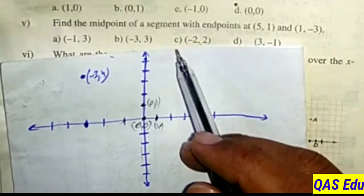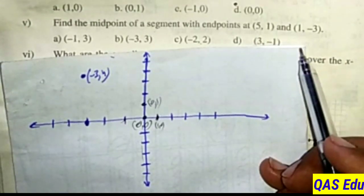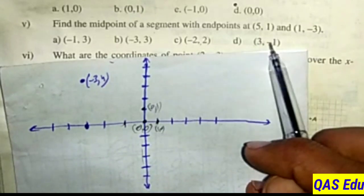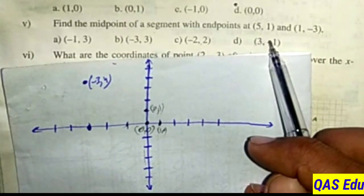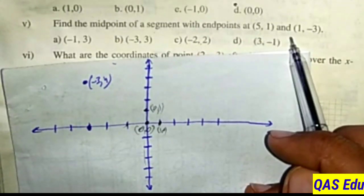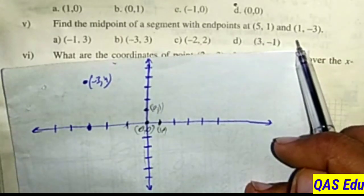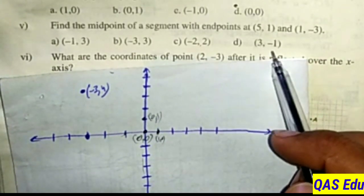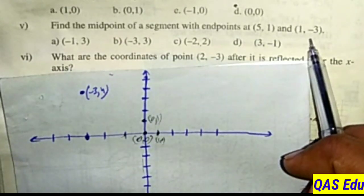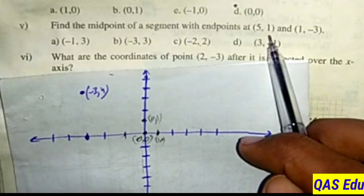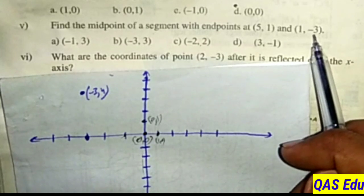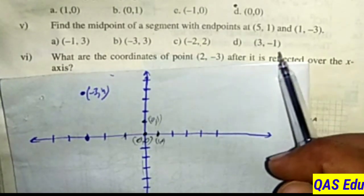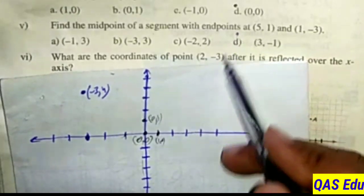Find the midpoint of a segment with endpoints (8,5) and (1,-3). The midpoint formula for line segment AB uses coordinates: x1 plus x2 divided by 2, and y1 plus y2 divided by 2. For x: 8 plus 1 equals 9, divided by 2. For y: 5 plus minus 3 equals 2, divided by 2 equals 1. The answer is correct, option D.